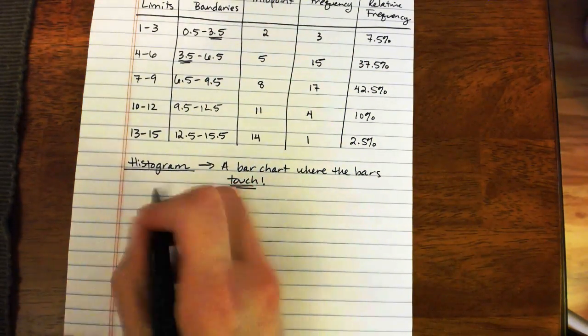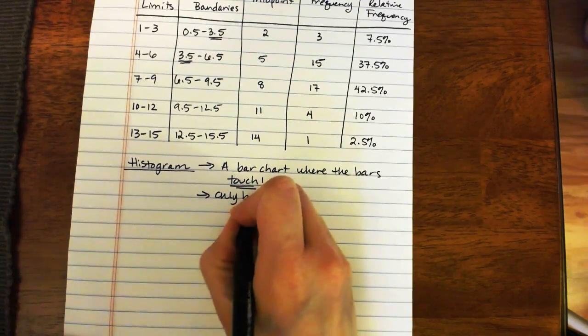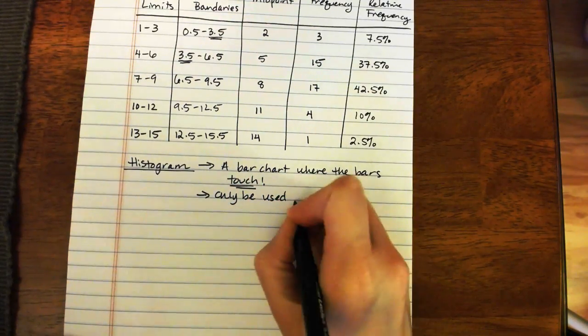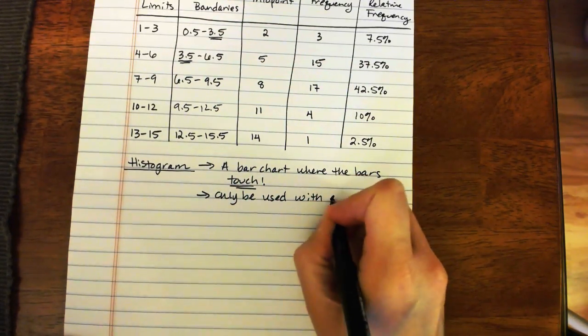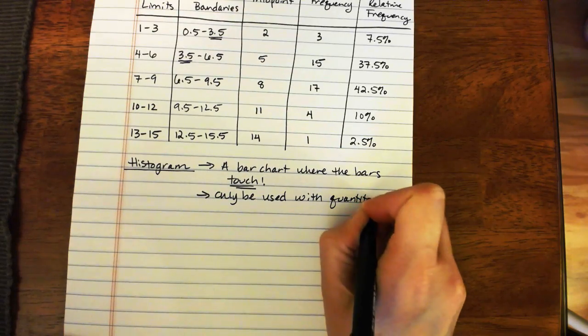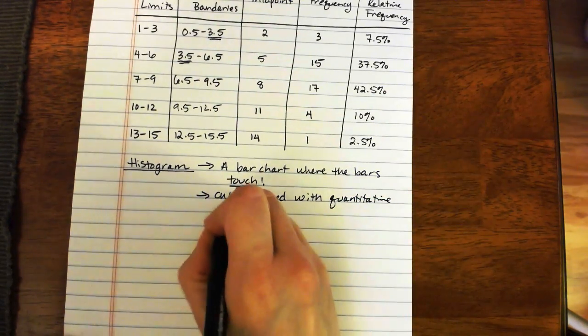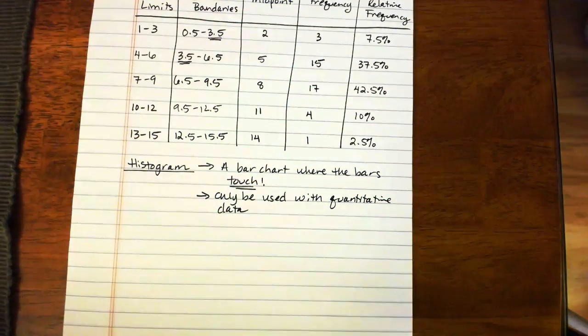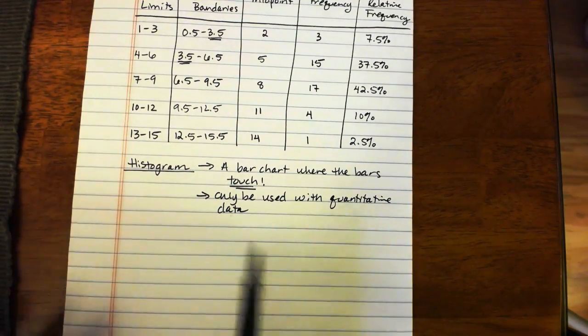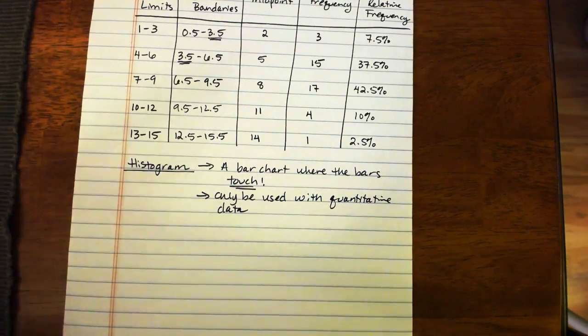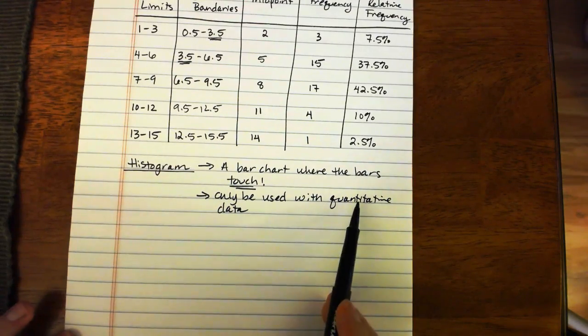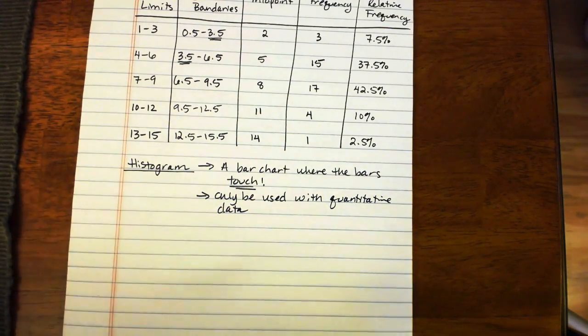The other important thing to know about histograms is that they can only be used with quantitative data. They are not to be used with qualitative data. If we had qualitative data, we would use a bar chart instead, and it wouldn't be necessary for the bars to touch. But with a histogram, we're using that for quantitative data. The bars will touch.